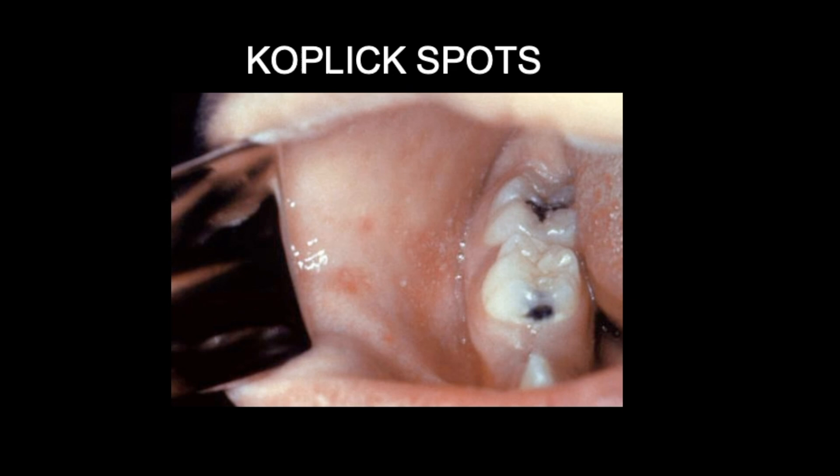Koplik spots, also known as Koplik sign, is a prodromic viral enanthem of measles, which manifests two to three days before the measles rash itself.